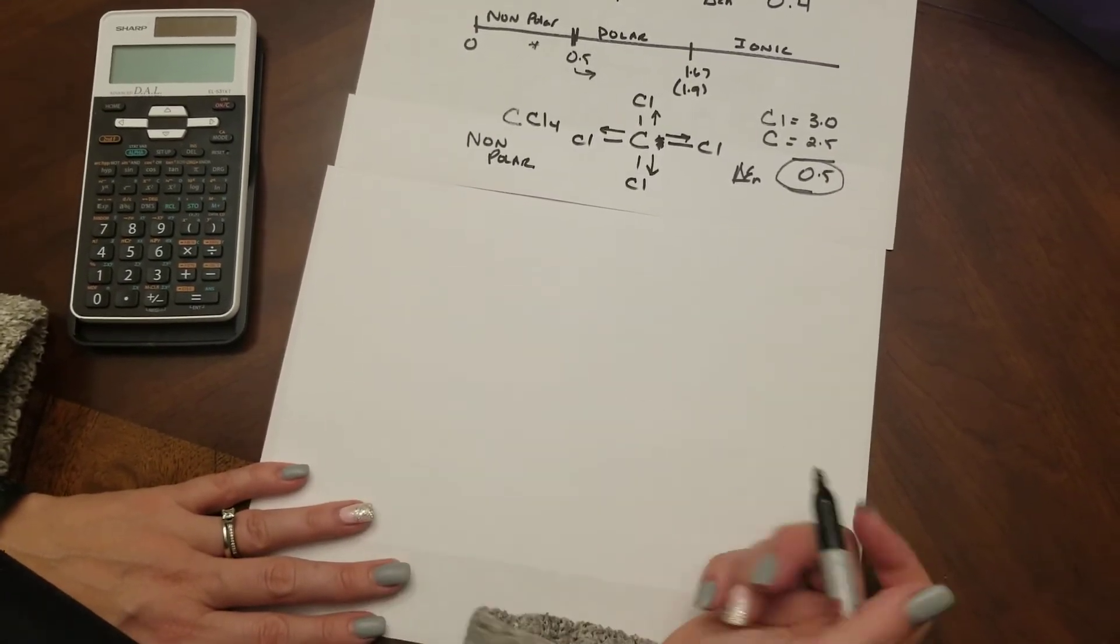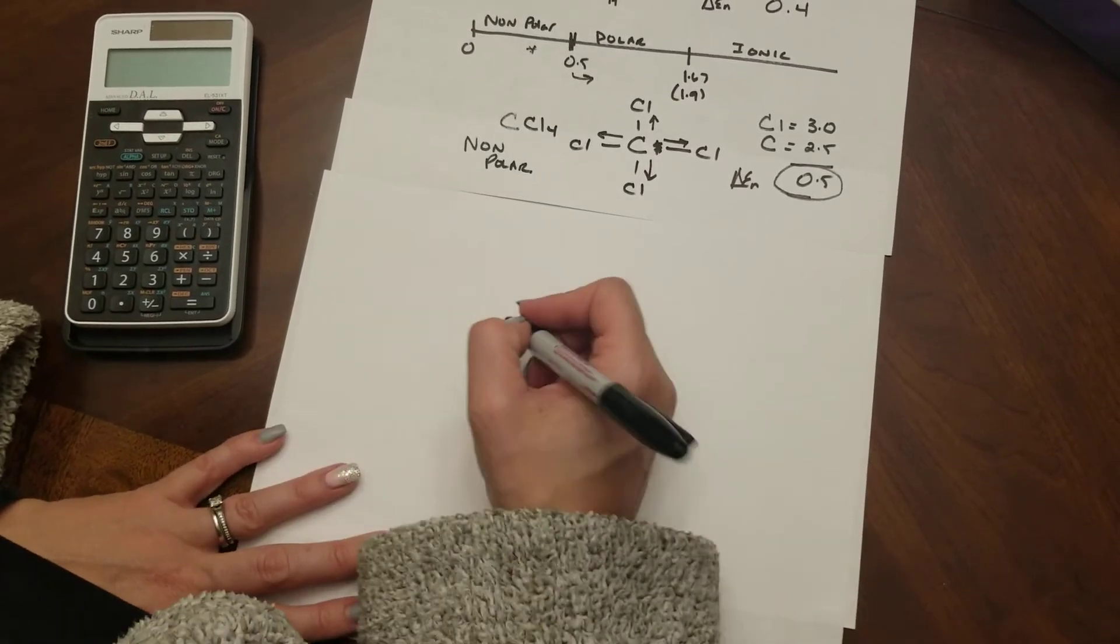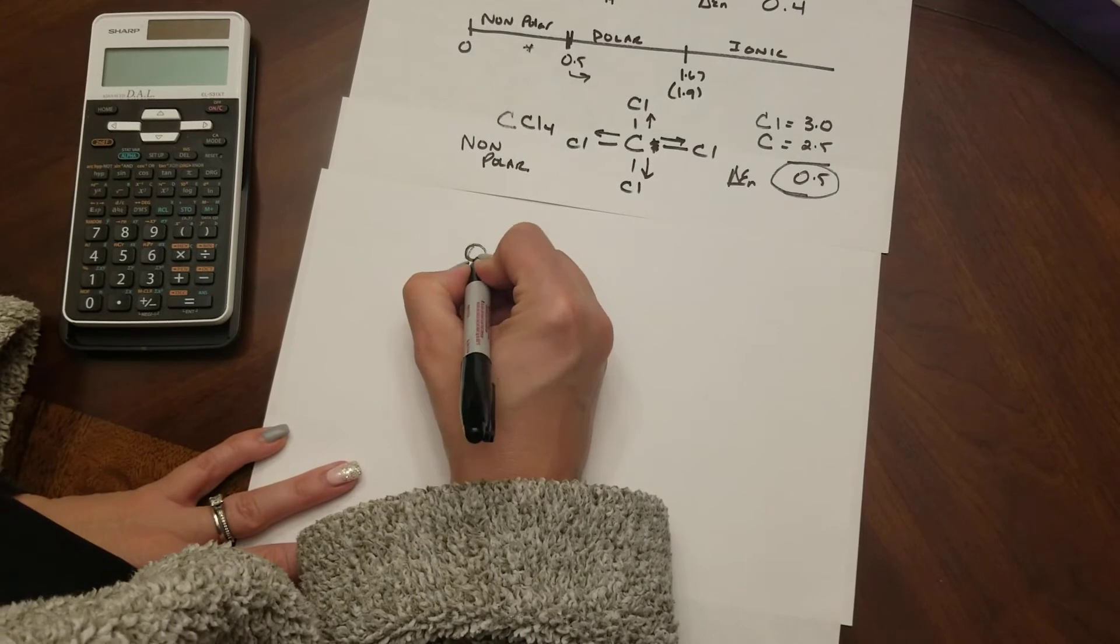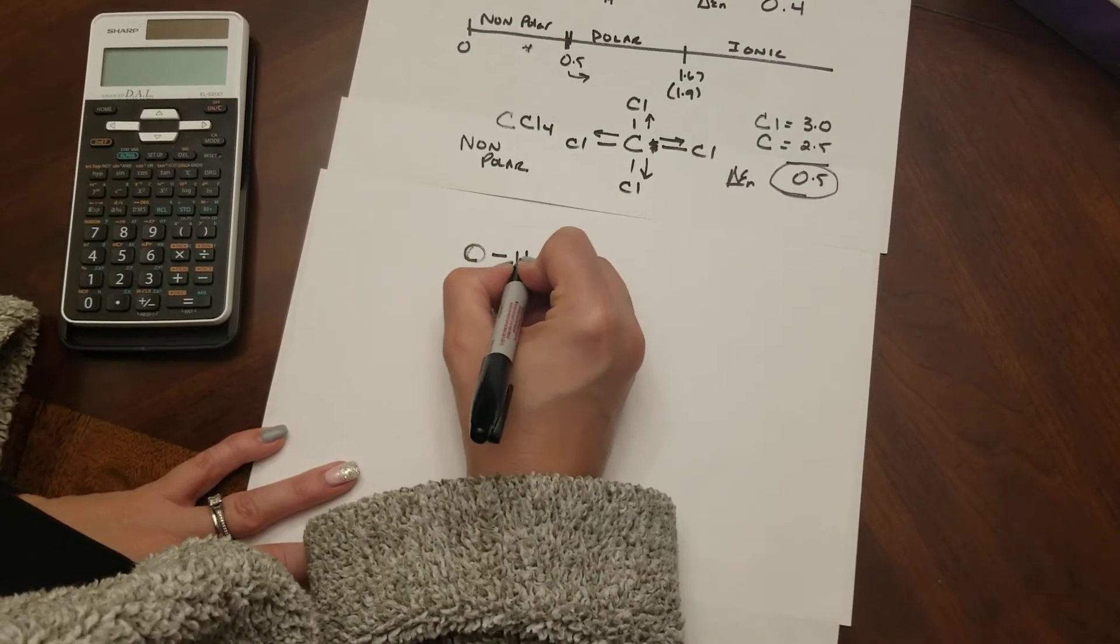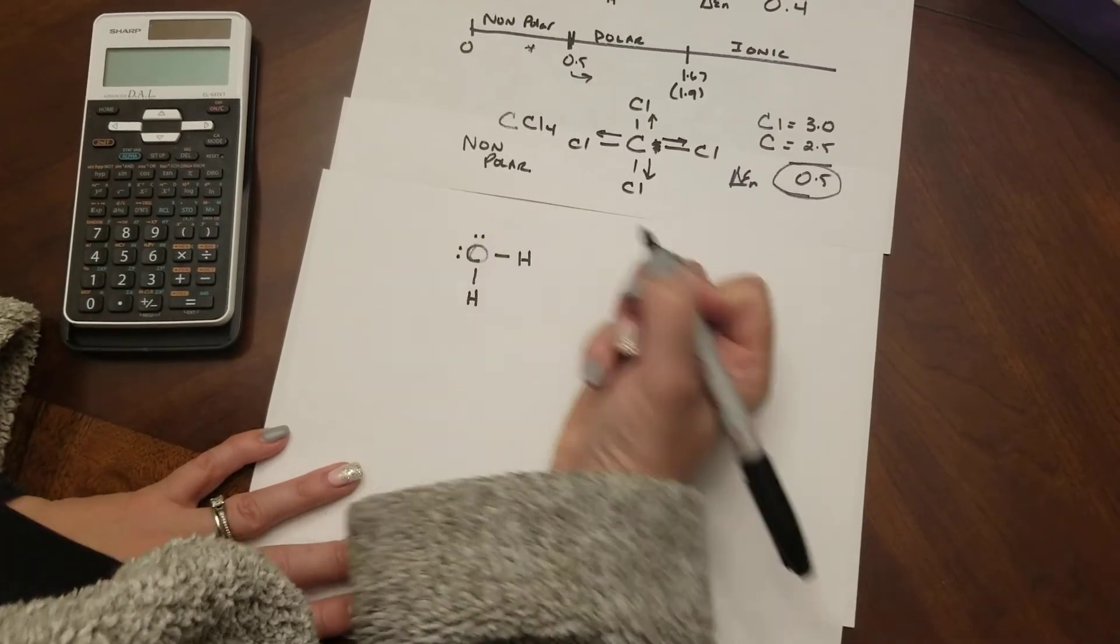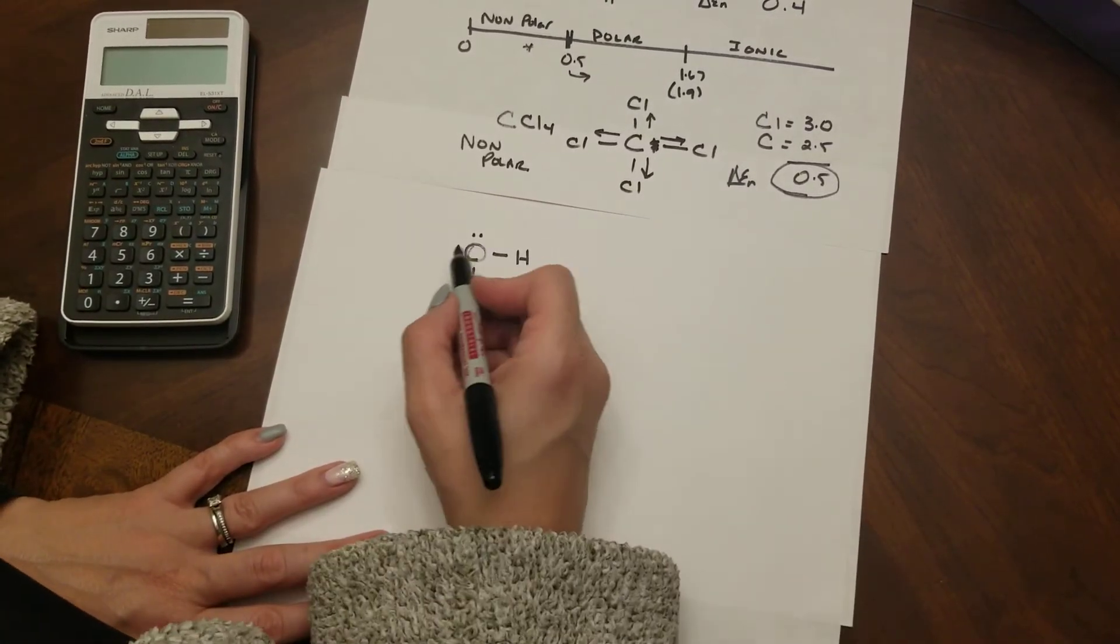Now at the beginning of our lessons we talked about the five steps for drawing molecules. I'm going to quickly draw out a couple of them here for you. Take a look at the molecule for water.